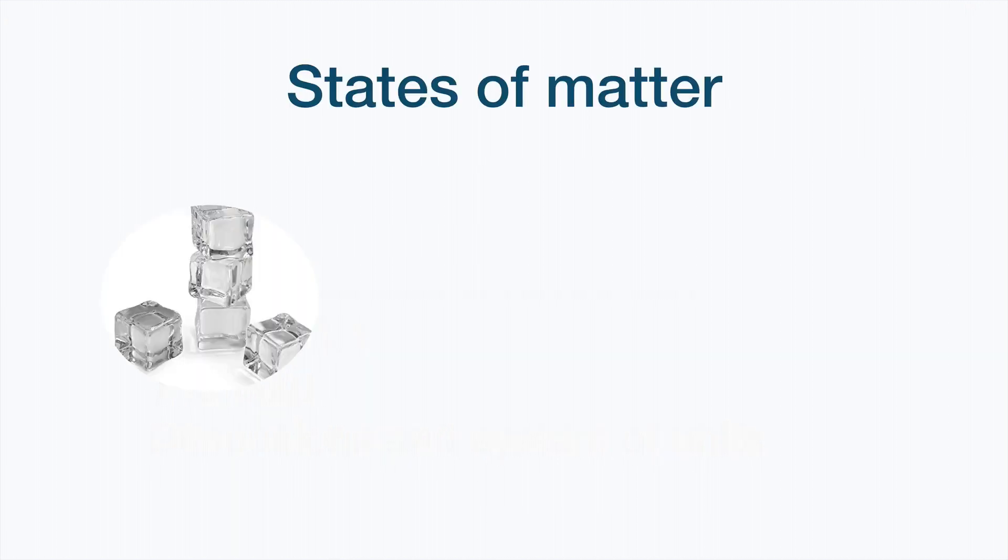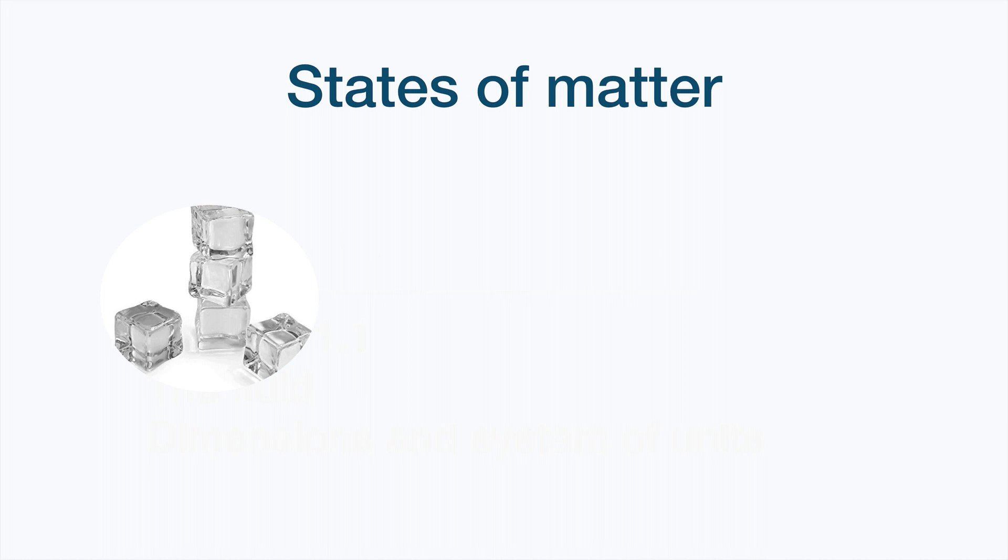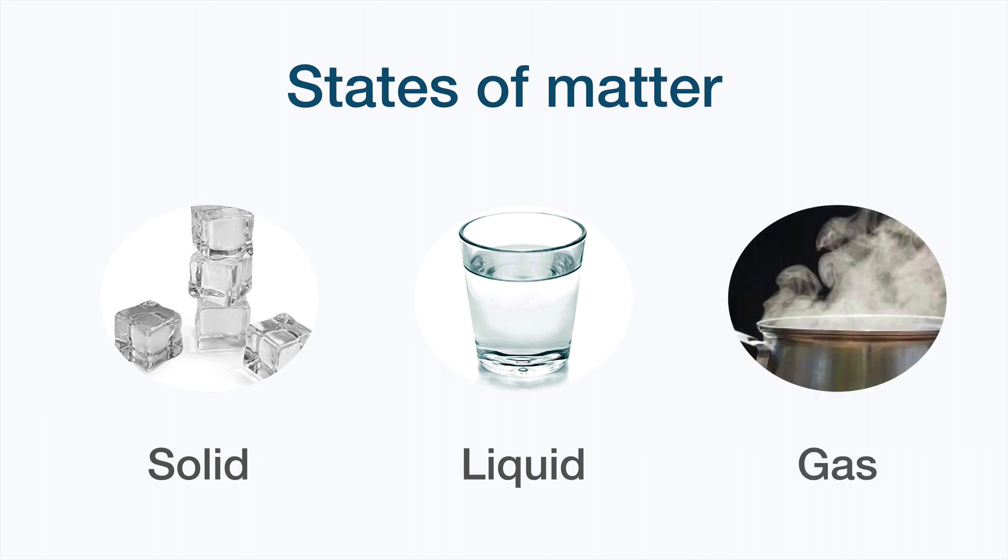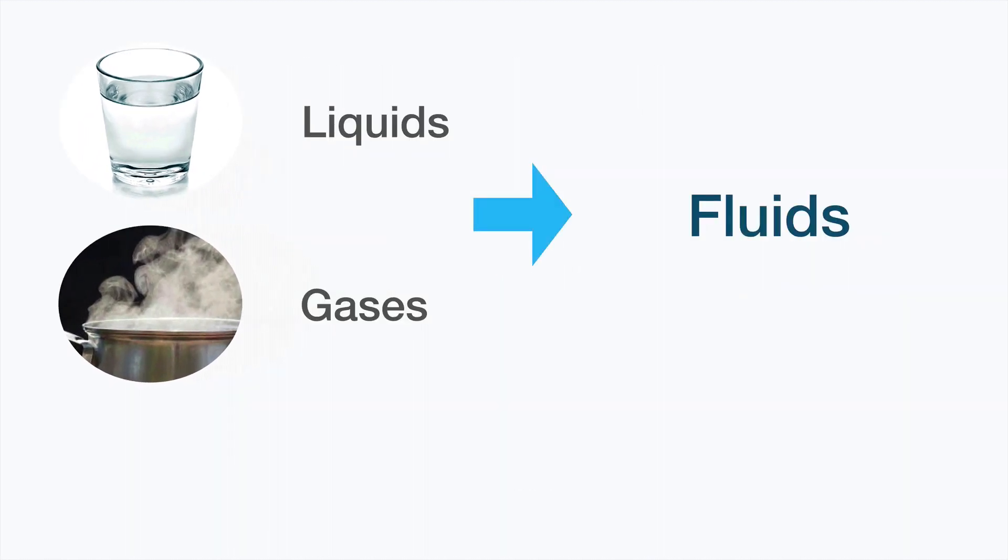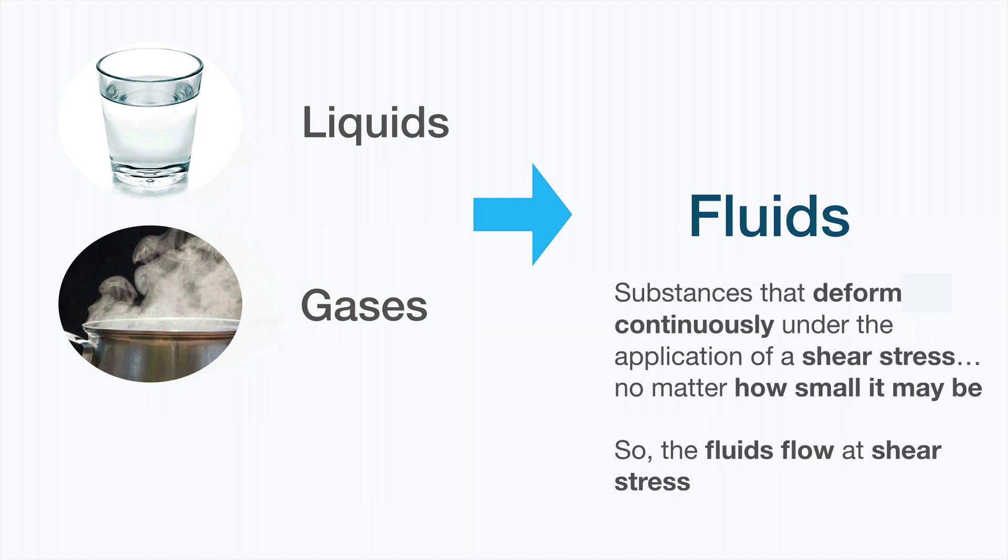We all know that matter can be found in nature in three states: solid, liquid, fluid and gas. Among these, the liquids and gases form the fluids. Let's remember what a fluid is. Fluids are a substance that deforms continuously under the application of a shear stress, a tangential stress, no matter how small it may be. This is the main difference between fluids and solids. The fluids flow.